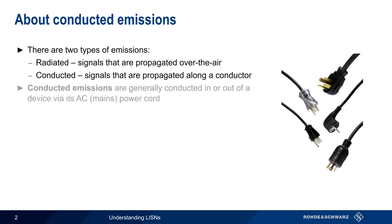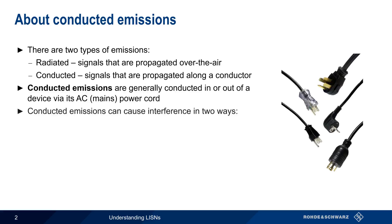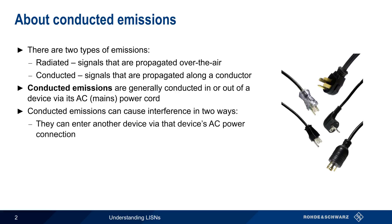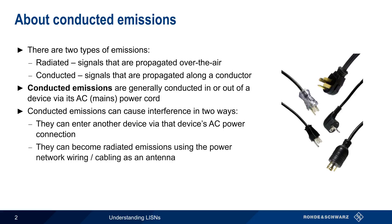In the EMC world, conducted emissions are generally carried in or out of a device via its AC or mains power cord. These conducted emissions can create interference in two ways. First, they can enter another device by being conducted in over that device's AC power connection. They can also be converted from conducted into radiated emissions — for example, when power network wiring or cabling acts as an antenna.